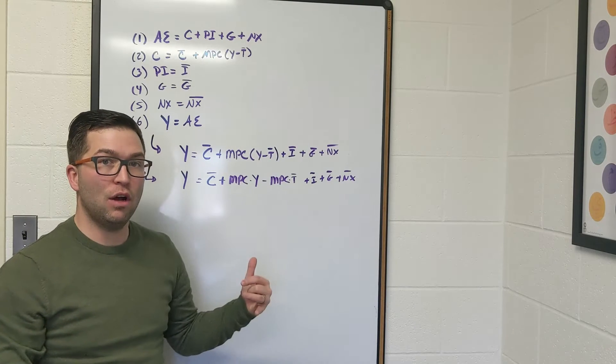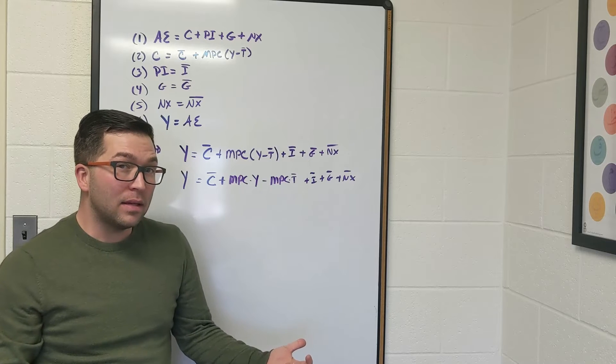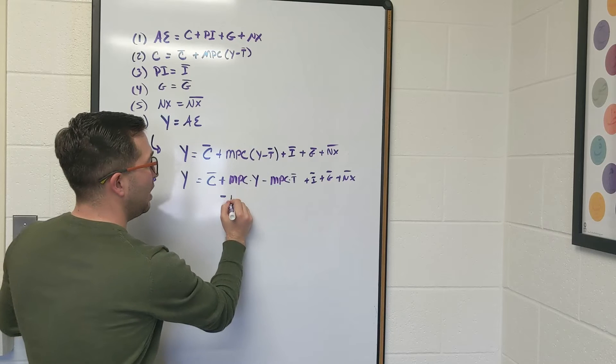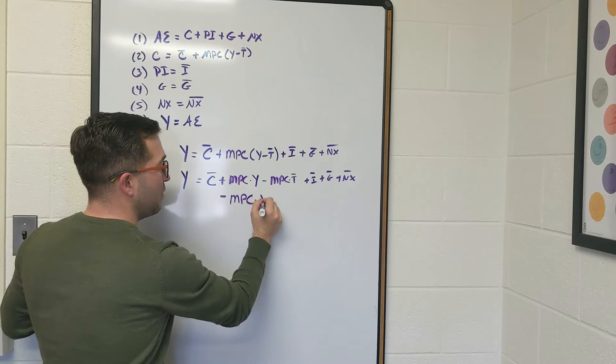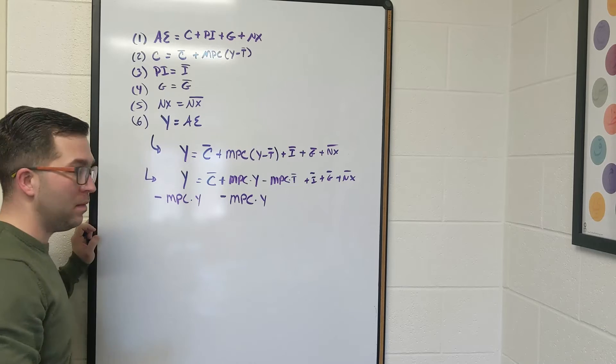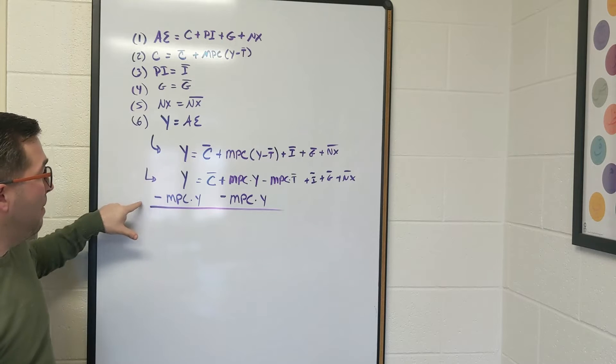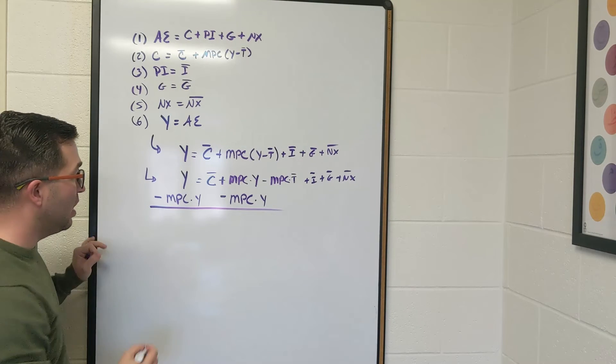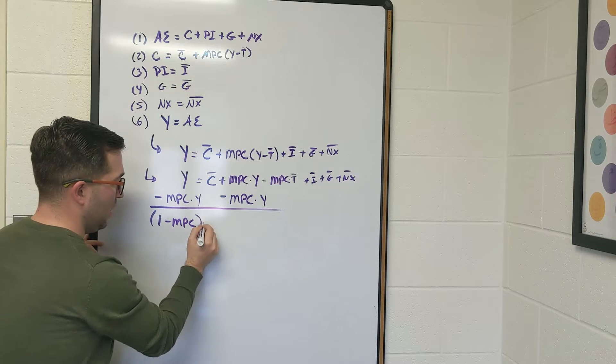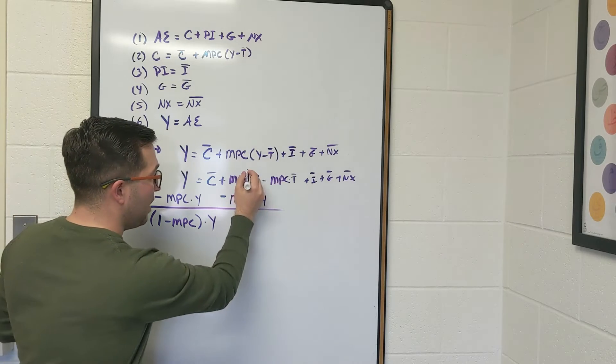Most students can follow along that far. We then want to isolate the Y. So we have a Y over here and a Y over here. Let's go ahead and subtract MPC times Y from both sides. Let's see what we get. On this left-hand side, I have one Y minus MPC times Y. So I have 1 minus MPC times Y. These are going to cancel out.